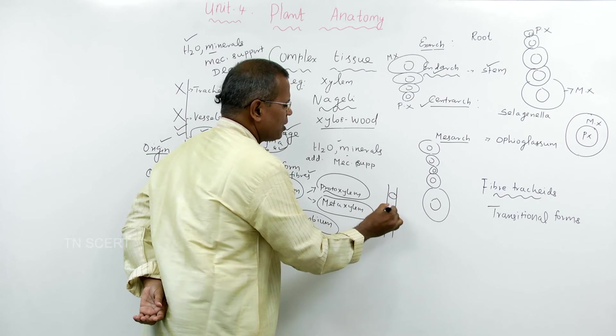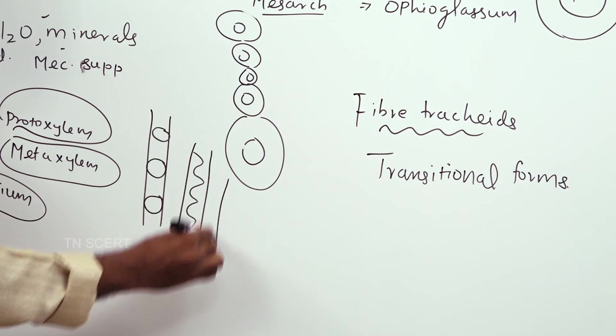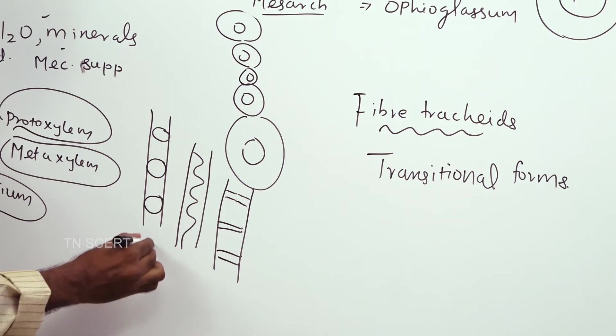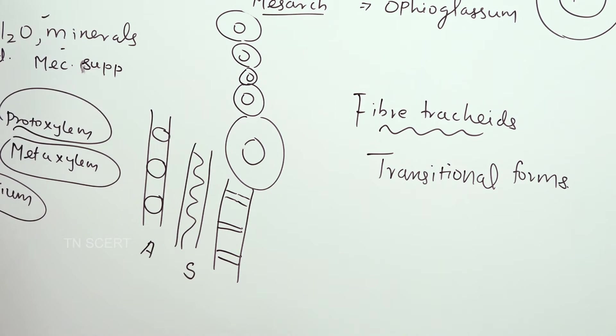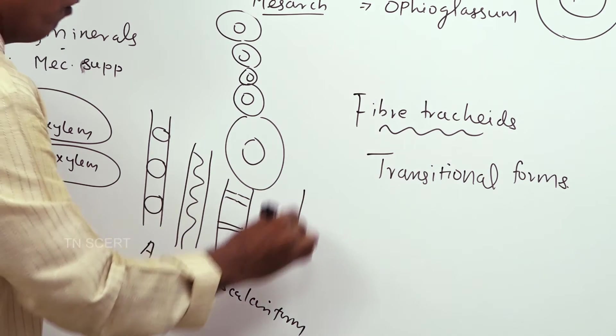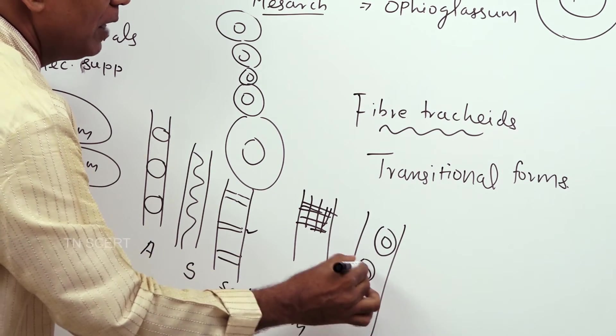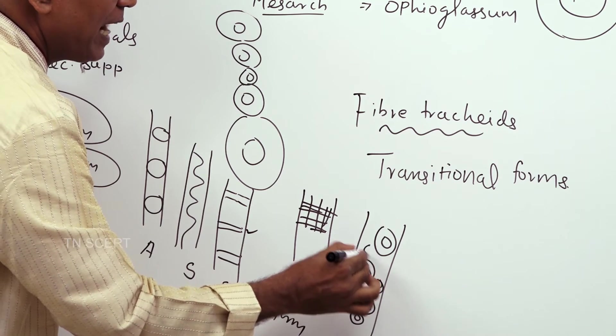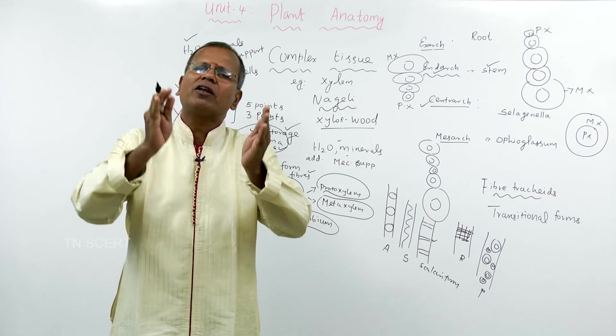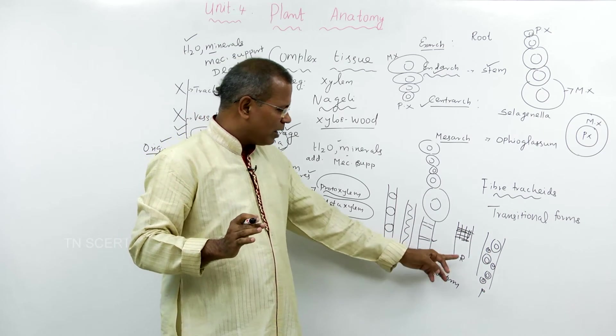Protoplasm is absent, they are dead. In the microscope, electron microscope, various thickenings seen on their cell wall. Due to the deposition of cell wall material, various thickenings seen on their cell wall. One is annular, spiral, scalariform, reticulate and pitted.